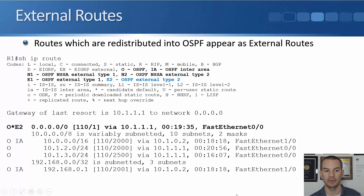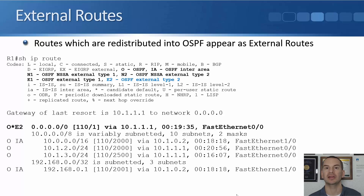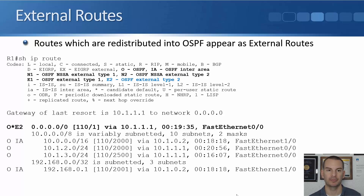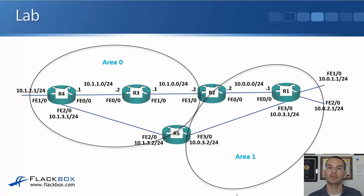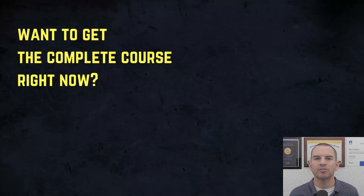To summarize the route codes: 'O' means intra-area — the destination is in the same area. 'O IA' is an inter-area route learned from an ABR in another area. 'O E2' means it was redistributed into OSPF. That covers OSPF areas — see you in the next lecture for a lab demo.